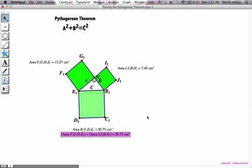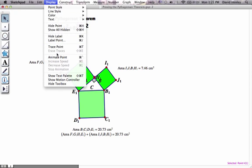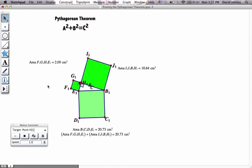So we're pretty sure now that the Pythagorean theorem is going to hold up. But we're not positive. So we're going to see if it passes the drag test. So we're going to grab our point at the top of our triangle, go to Display, and we're going to do Animate Point.